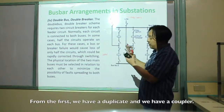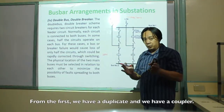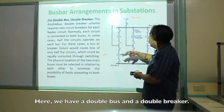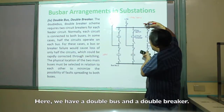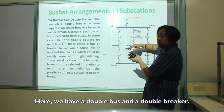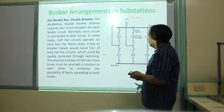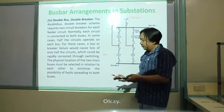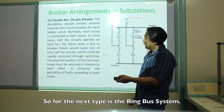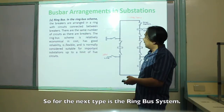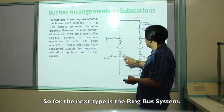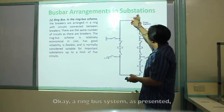Double bus bar and double breaker is different from the duplicate. In the duplicate, you have one coupler. Here, you have a double bus and a double breaker. The next type is the ring bus system.